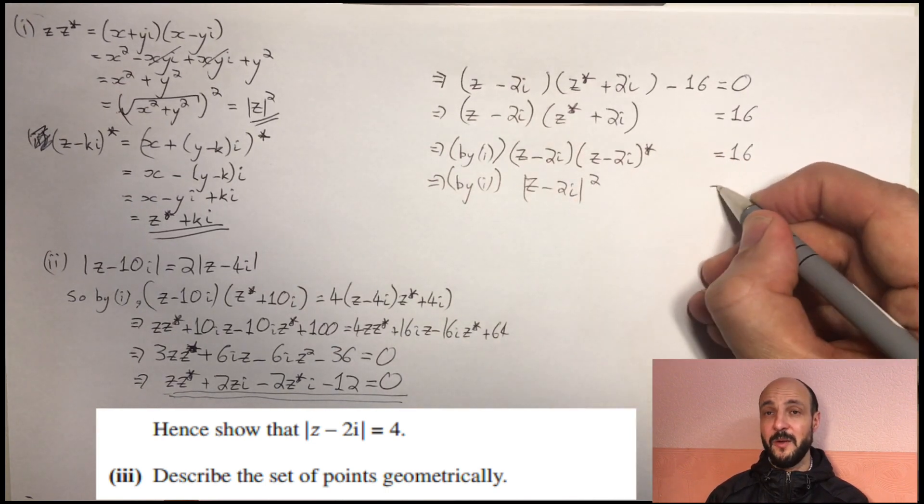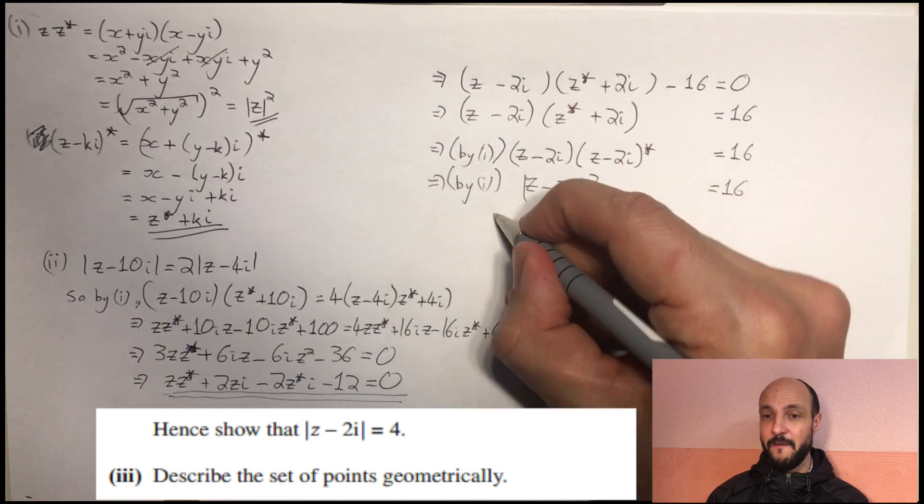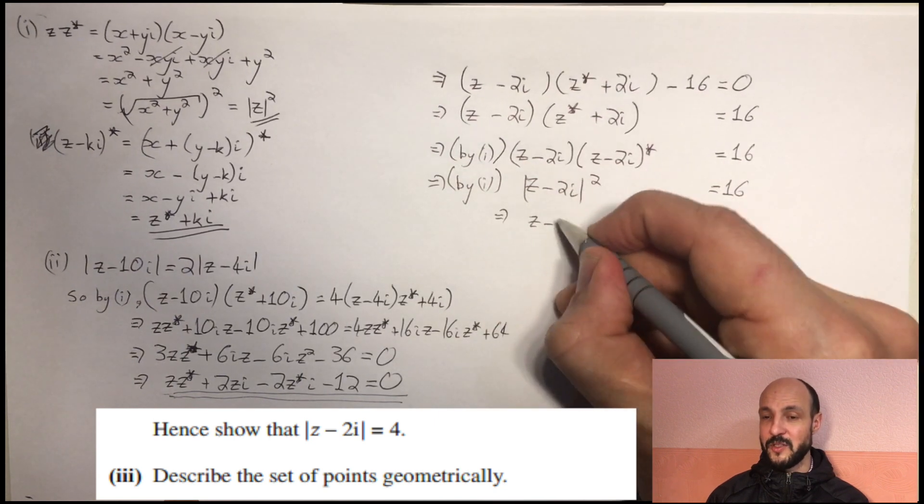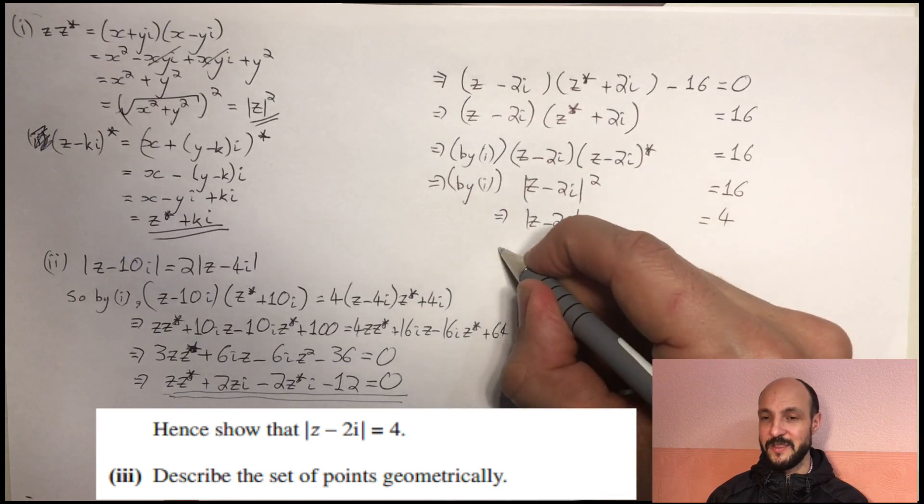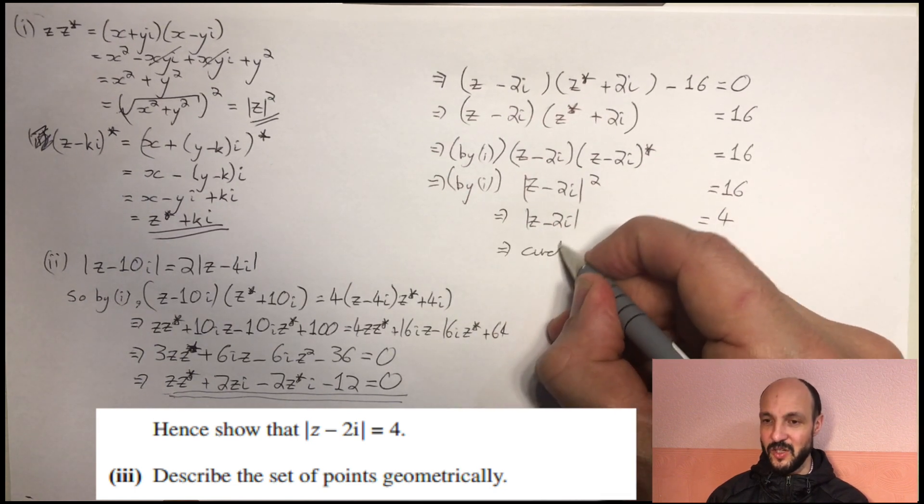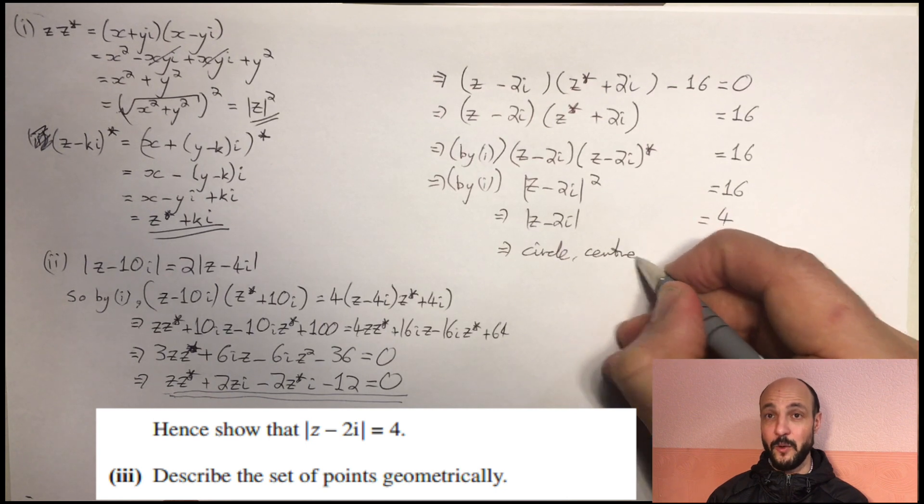What is this geometrically? Well, z is always 4 away from the point 2i. The distance between z and the point 2i is always 4. So essentially, this is a circle centered on 0, 2 with radius 4.